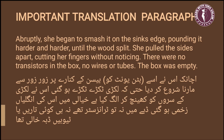The English text reads: 'Abruptly she began to smash it on the sink's edge, pounding it harder and harder until the wood split.' Abruptly kehte hain achanak ko. Achanak usne us [button unit] ko basin ke kinaare par zor zor se maarna shuru kar diya — hatta ki yeh lakdi tukde tukde ho gayi. Note: the word 'button unit' is not in the original line, so we add it in brackets as additional information. If you write it without brackets, it will be considered incorrect.